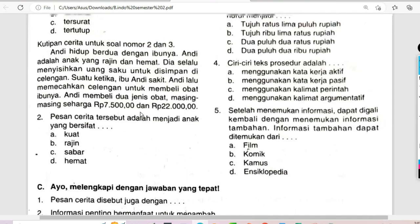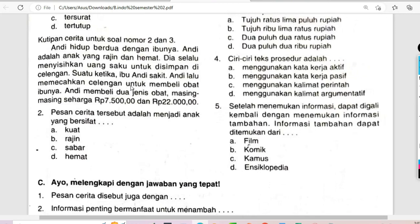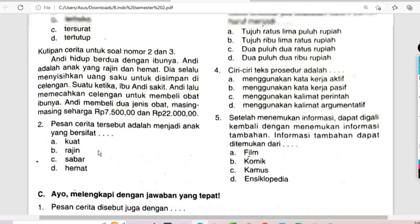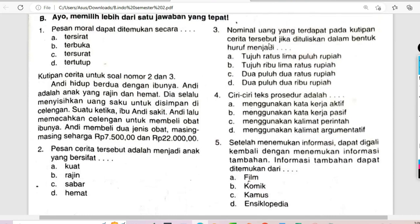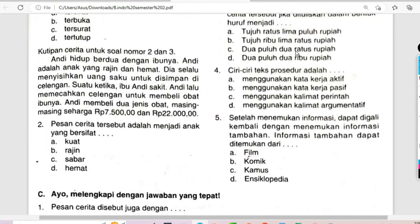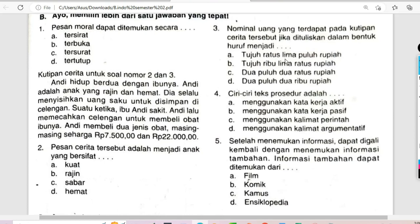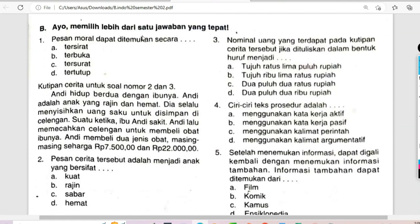Andi membeli dua jenis obat masing-masing seharga Rp7.500 dan Rp22.000. Untuk soal nomor 3, nominal uang yang terdapat pada kutipan cerita jika dituliskan dalam bentuk huruf: B adalah Rp7.500 — benar, D adalah Rp7.500 dan Rp22.000 — ini juga ada. Kita boleh memilih lebih dari satu jawaban yang tepat, yaitu B dan D.